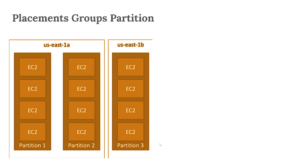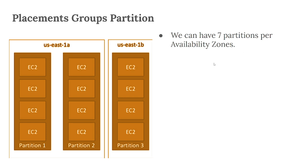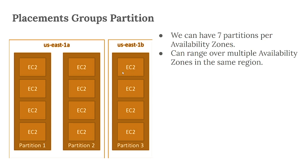Next, Placement Group Partition. In this, instances are spread across partitions in multiple Availability Zones — seven partitions per Availability Zone. In this example, partition one is in us-east-1a, partition two in us-east-1a, partition three in us-east-1b. On each partition we can have many EC2 instances — for example four instances per partition.